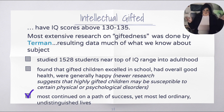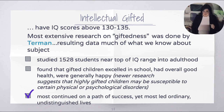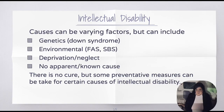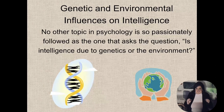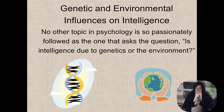It's odd that they didn't all turn out to be like Steve Jobs of the world, making a lot of money and inventing something really important. Most intellectually gifted people led relatively normal lives. So let's talk about the influences on intelligence and the genetic versus the environmental influence. There's no other topic in psychology so passionately followed as the one that asks whether intelligence is due to genetics or environment — is our intelligence something we're born with, or something shaped by our environment?